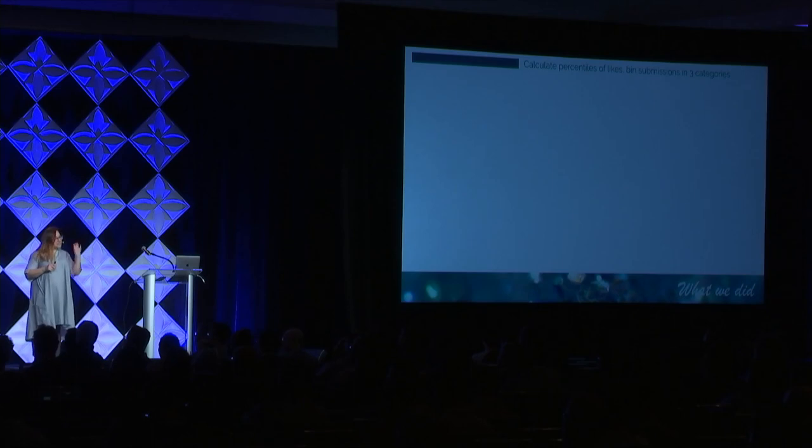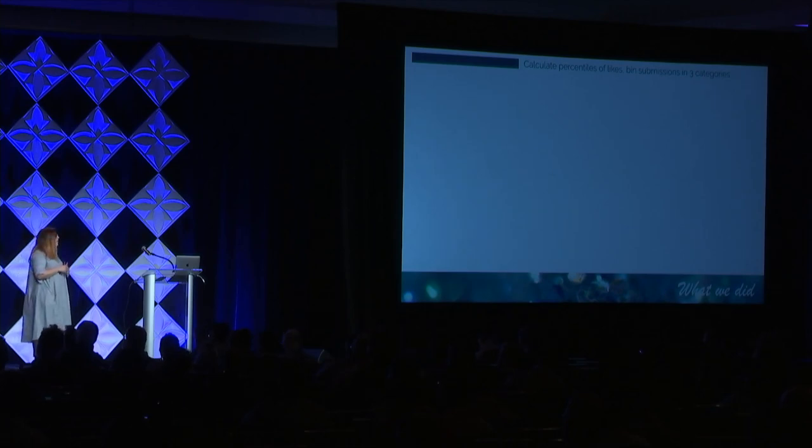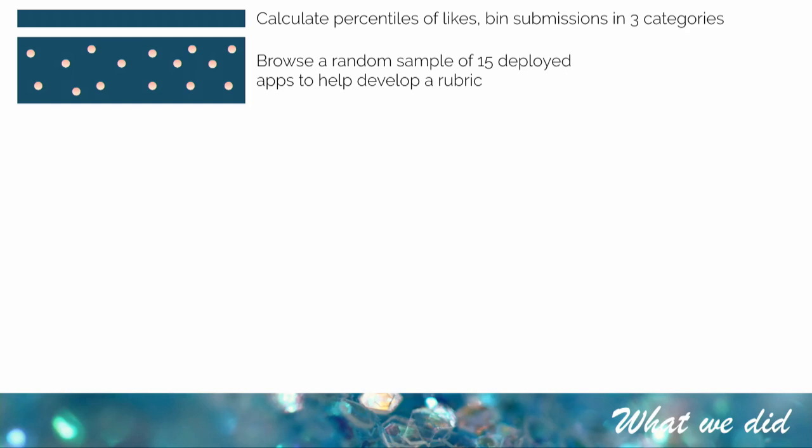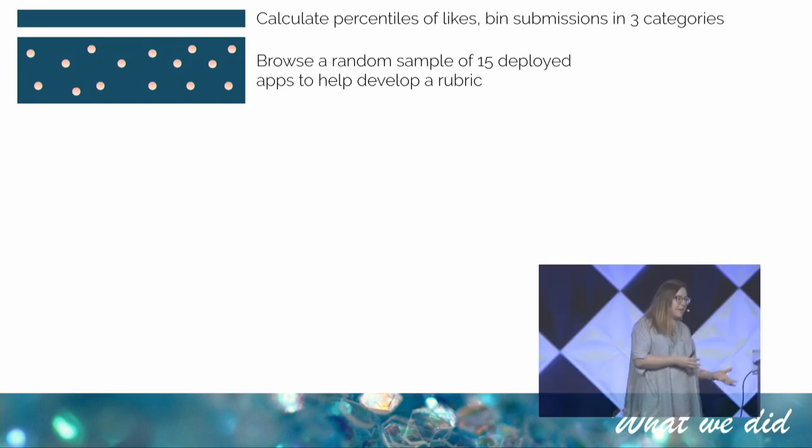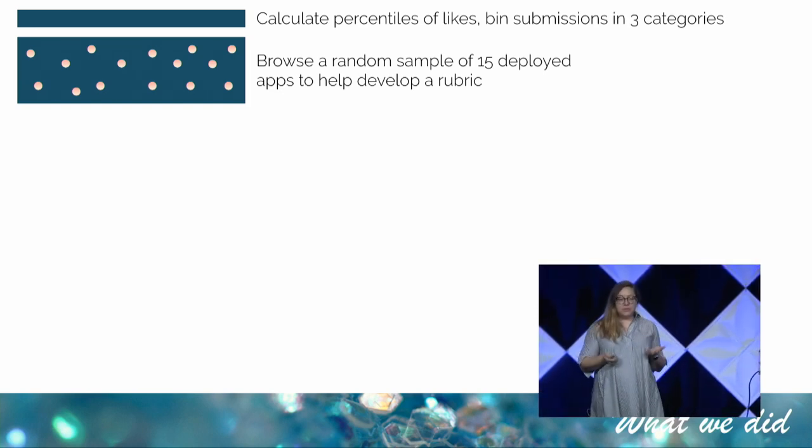So I actually started by getting the data out of RStudio Community and calculated percentiles of likes, just to see if binning these into categories in terms of the number of likes would be a good criteria. Ultimately, even though I did that calculation, it didn't factor a whole lot into it — because if you submit earlier, obviously there's more time to get more likes, and that doesn't seem entirely fair. Then I took a random sample of 15 apps — not the earlier or later ones, but a truly random sample — and literally went through them all: what does the UI look like, what does the code look like, what was the ambition, did they actually fulfill that? And used that to develop a rubric.